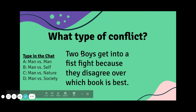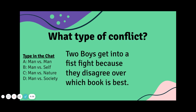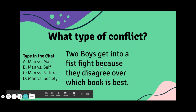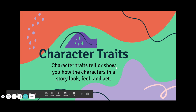So let's think about this: two boys get into a fist fight because they disagree over which book is best. What type of conflict is that? Is it character versus character? Character versus self? Character versus nature? Character versus society? Think about it — send me an email, and if you do, I'll give you bonus points.